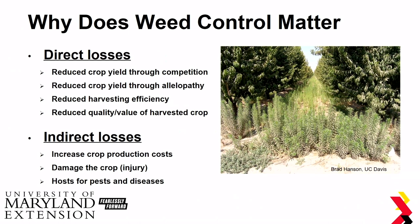Why does weed control matter? It causes both direct and indirect losses. Direct losses include reduced crop yield through competition, reduced crop yield through allelopathy, reduced harvest efficiency, and reduced crop quality and value. Indirect losses include increased crop production costs, unwanted crop injury, and weeds can also act as hosts for other pests and diseases.